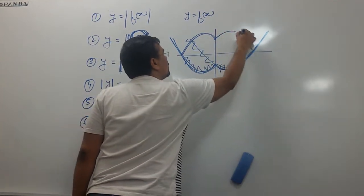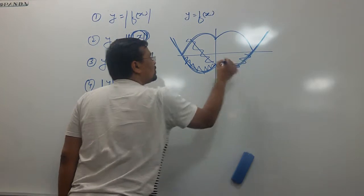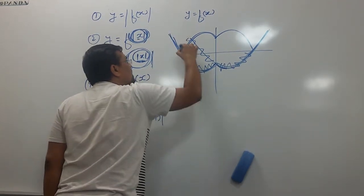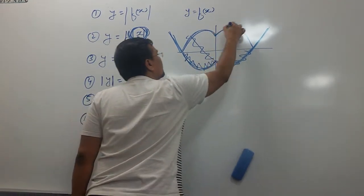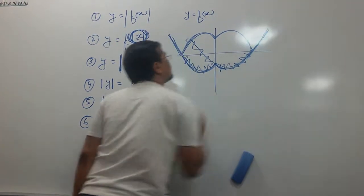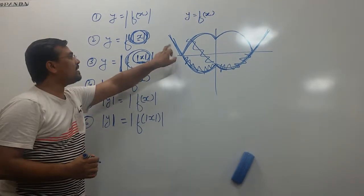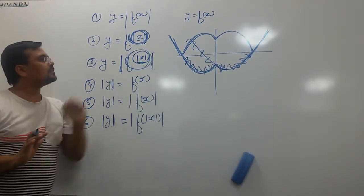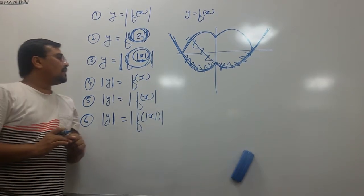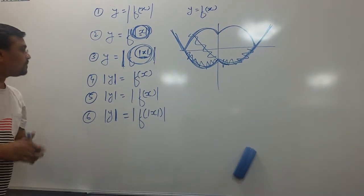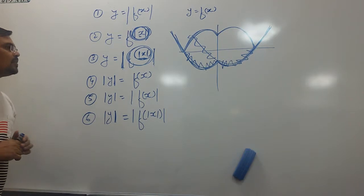So the final graph for number 3 looks like this: this part, and that, and this, and that — combining both transformations. This is my number 3 graph.